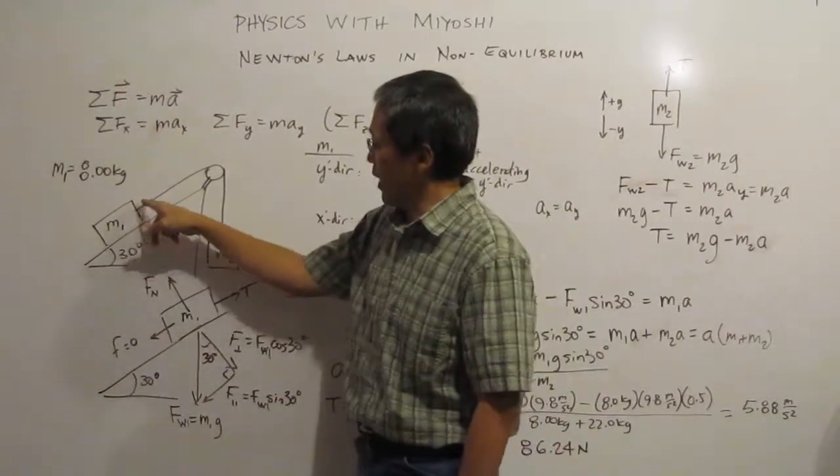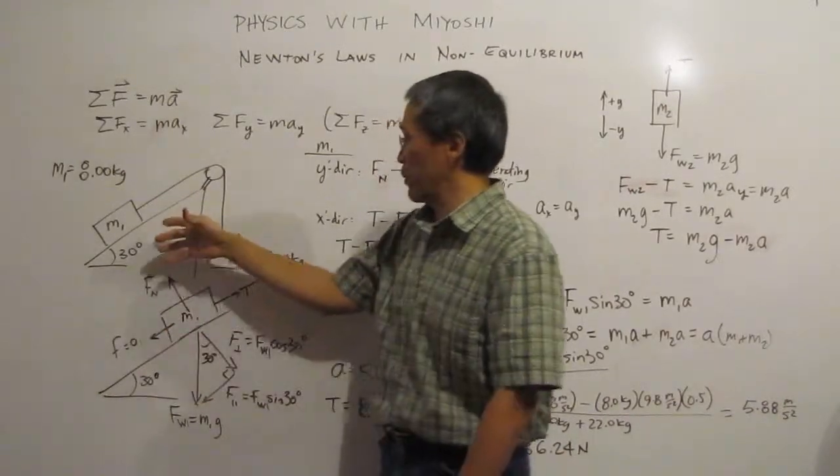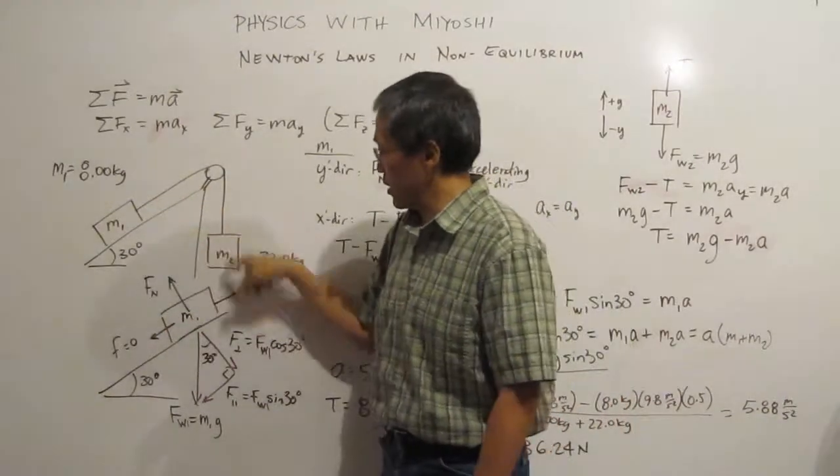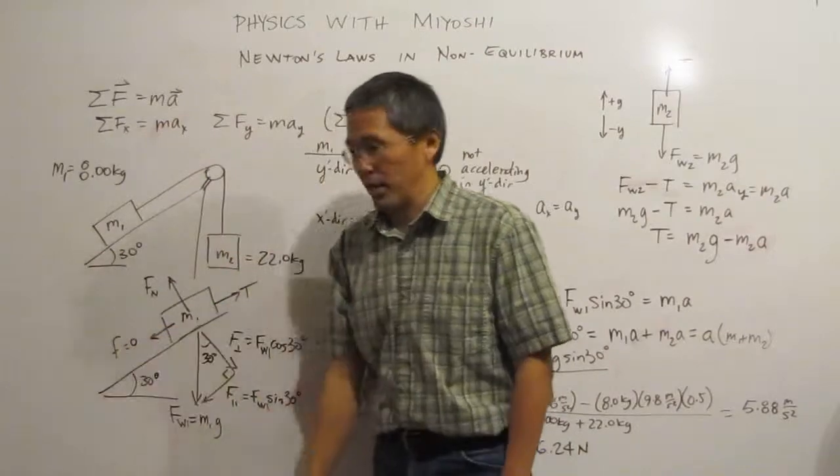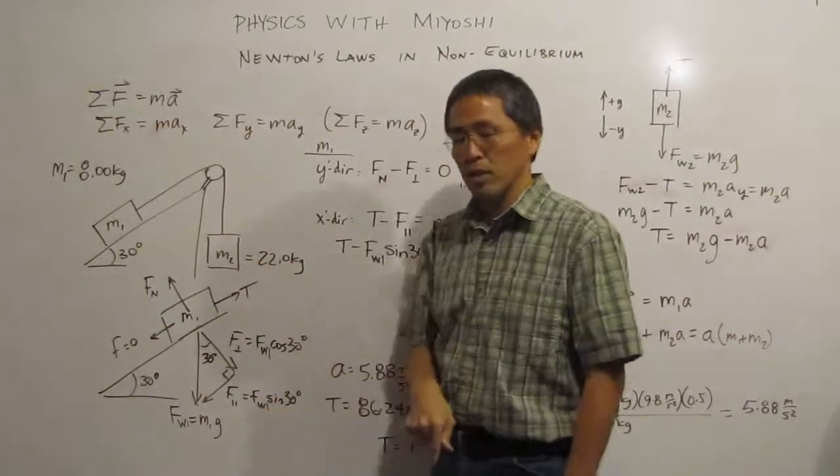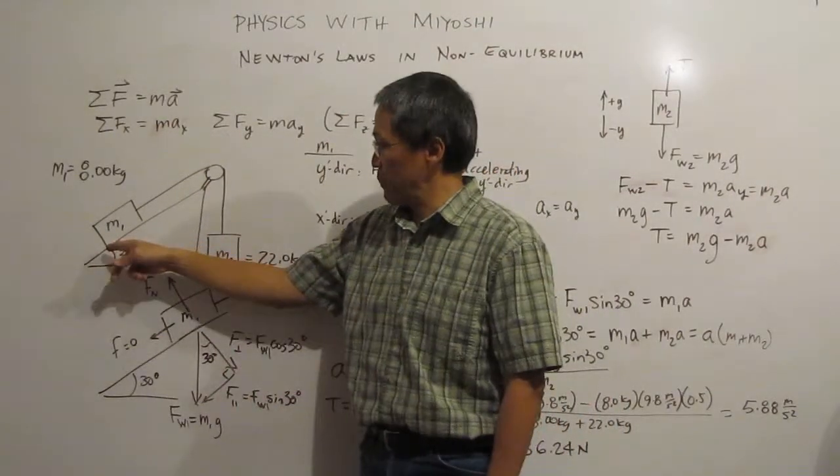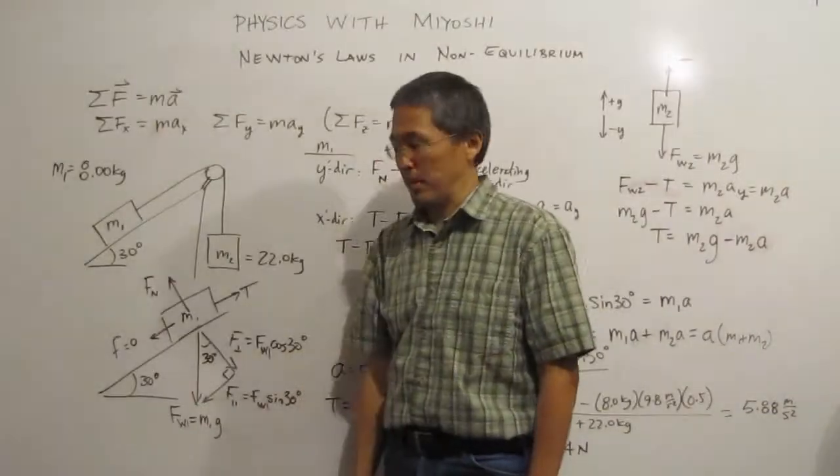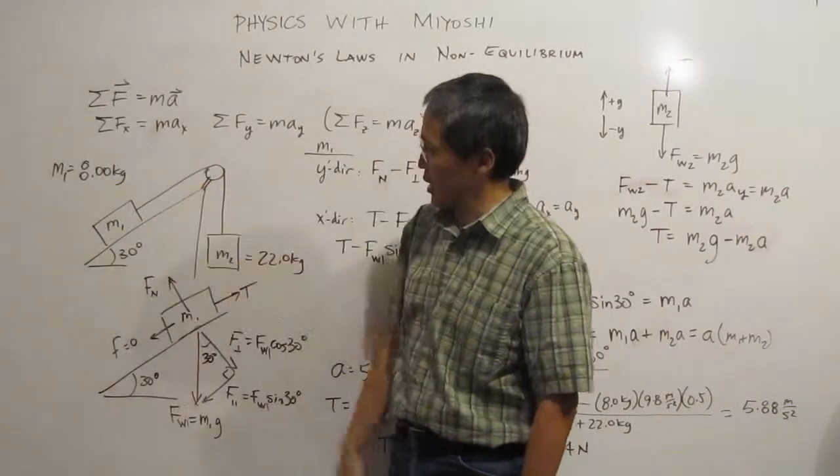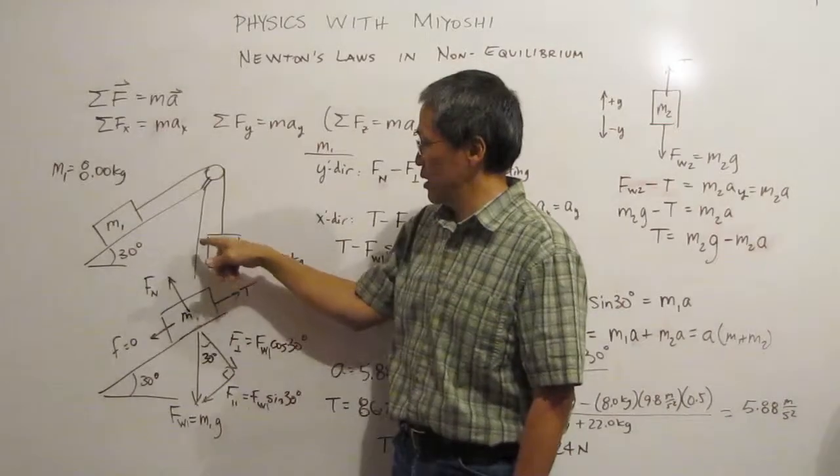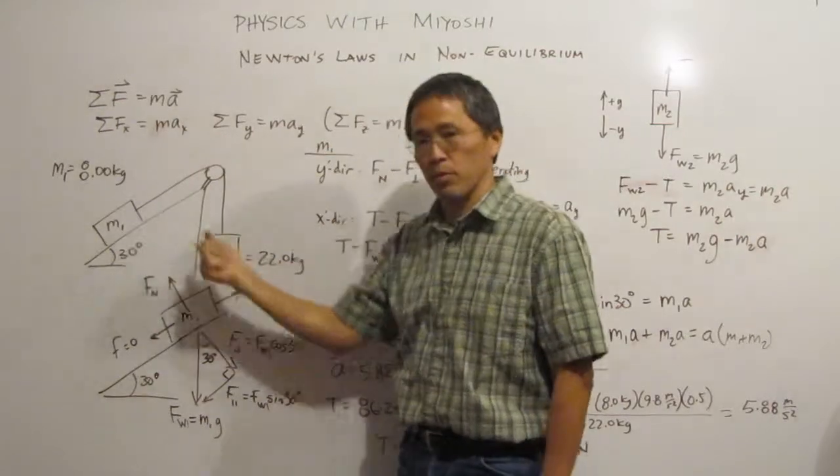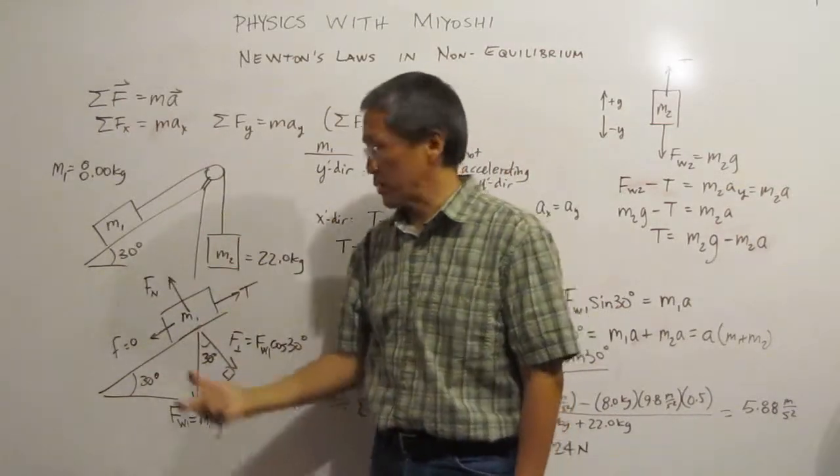Now when we solve the problem, we're going to assume that this guy falls and not this guy falling that way, mostly because this is 22 kg and because that slope isn't big enough. If it was a vertical slope, we could think that it would pull down. So we're going to assume that it goes this direction. And that's probably a pretty good assumption.